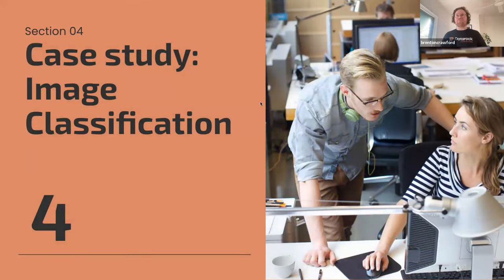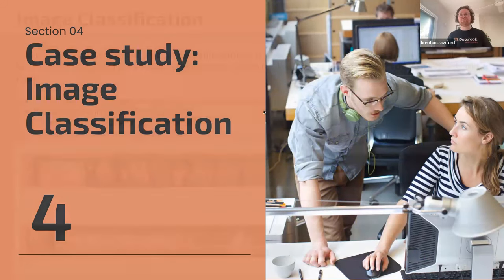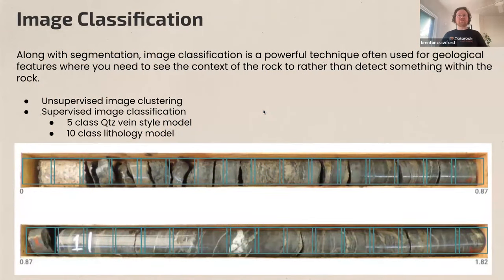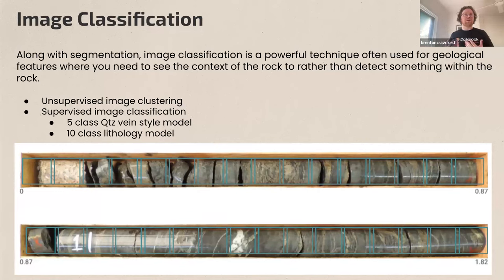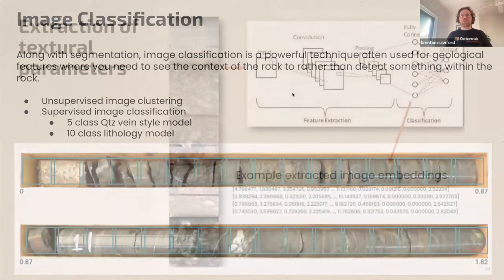Now let's look at image classification. Instead of segmenting features within the drill core, we're asking: what is this image, what kind of rock does it contain? We divide rows into small squares — or longer rectangles depending on what you're looking for — and can look at these images in an unsupervised way, just grouping images that look the same without a model, to show similarity space. Then we can use that to quickly create a training set for a supervised model.